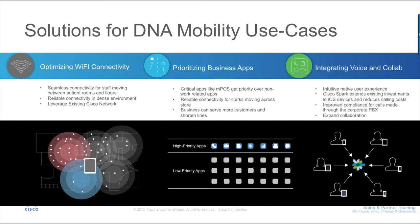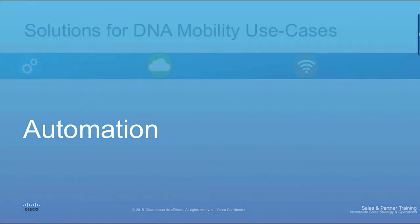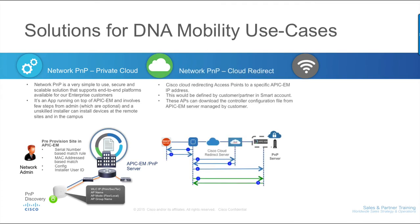Plug and Play for access point provisioning is a simple to use, secure and scalable solution using which an administrator can provision devices from a central site and an unskilled installer can install devices remotely. When an access point boots up, it can be directed to a private PNP instance running on APIC-EM or to the public cloud for further configuration via the controller or APIC-EM. This reduces the cost, complexity and effort associated with rolling out multiple branch offices or sites within an enterprise.